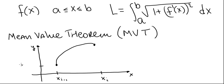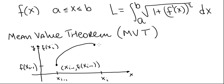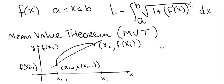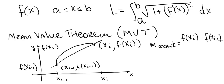This point here is f of xi minus 1, and the y-value up here is f of xi. So let's call this point (xi minus 1, f of xi minus 1) and this point has coordinates (xi, f of xi). Now let's draw a line segment through these two points — that's called a secant line. The slope of the secant line is equal to change in y over change in x: f of xi minus f of xi minus 1, divided by xi minus xi minus 1.